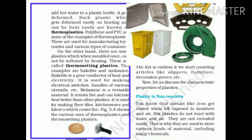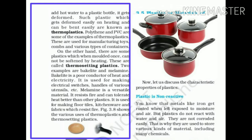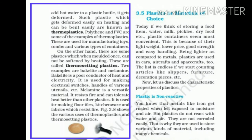Bakelite is a poor conductor of heat and electricity. That is why we use bakelite to make electrical switches and handles of various utensils like pans and cooker handles. Melamine is a versatile material. It is resistant to fire and can tolerate heat better than bakelite and other plastics. It is used for making floor tiles, kitchenware, and fabrics which resist fire. Figure 3.8 shows various uses of thermoplastics and thermosetting plastics.